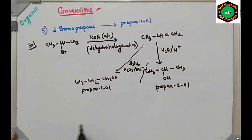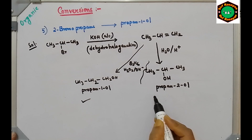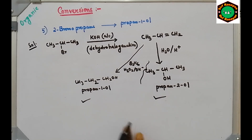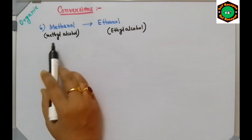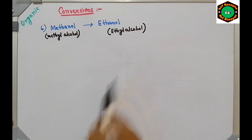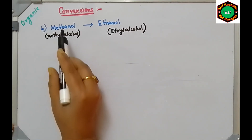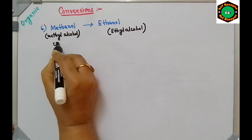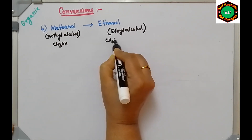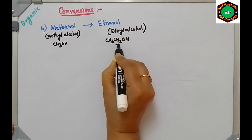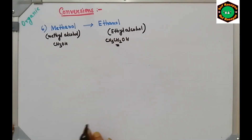So from 2-bromopropane: using alcoholic KOH followed by acid/water gives propan-2-ol; using alcoholic KOH followed by hydroboration-oxidation gives propan-1-ol. This is a very important conversion. Next is methanol to ethanol — methanol is CH3OH, ethanol is CH3CH2OH — there is one extra carbon in the product, so we do a stepping-up reaction.